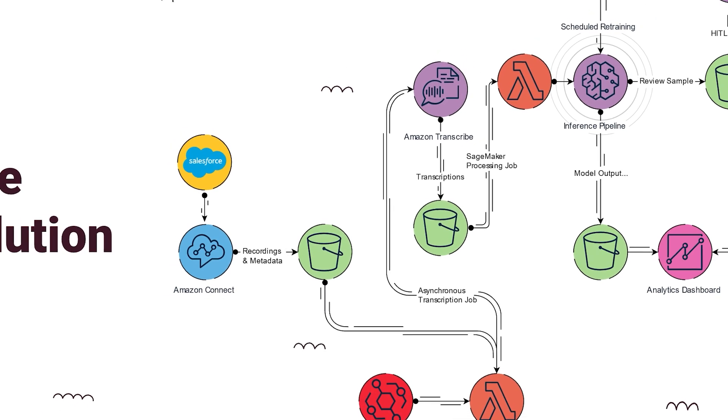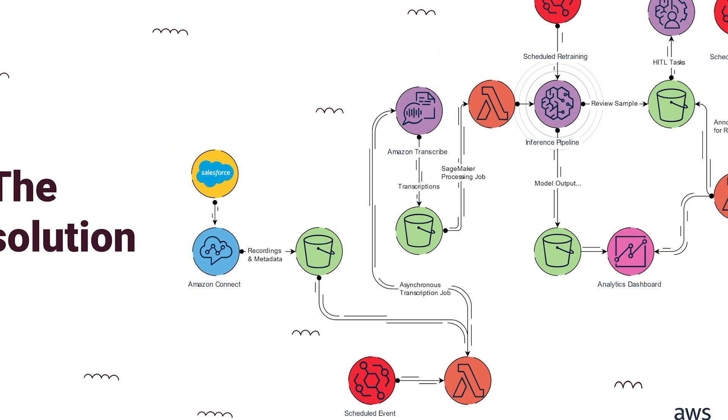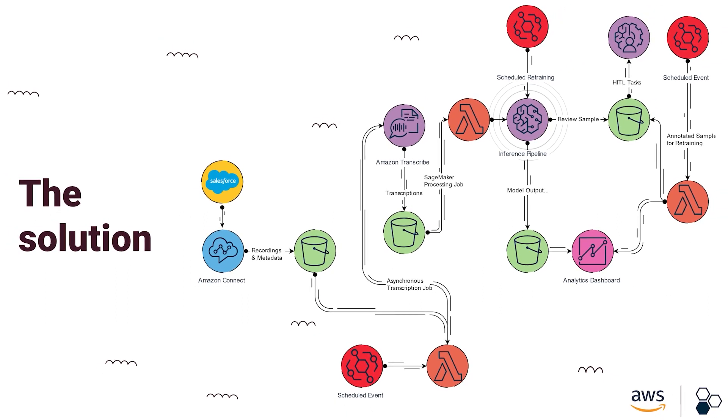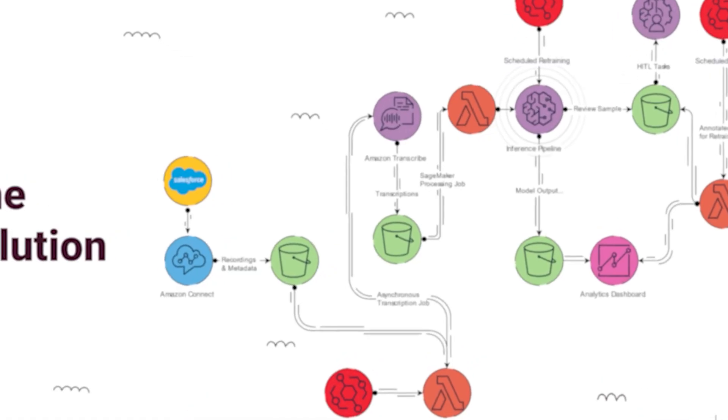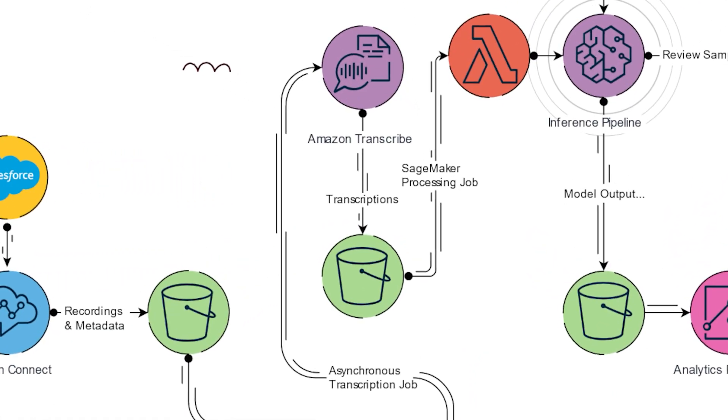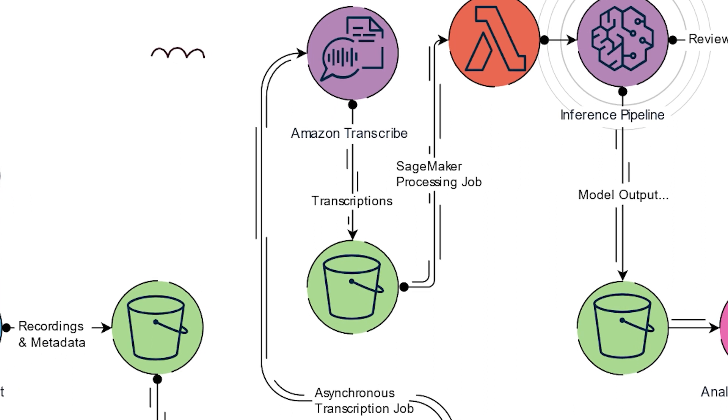This entire architecture is set to a schedule — for our South African client we've set it to a daily run, but based on your business use case you might change the schedule. At the end of the day our pipeline is set into motion by copying over the recordings from Connect's data repository into the inference pipeline's data repository, linking that with the metadata automatically stored by Amazon Connect and the CRM data from Salesforce. From there we use SQS to queue transcription jobs using Amazon Transcribe as our speech-to-text engine.